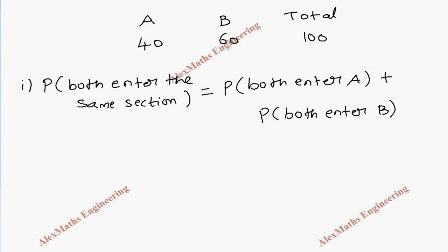When two persons enter section A, they are among the 40, so it is 40C2 divided by the total 100C2. The same way, when both enter section B, both are among the 60, so it is 60C2 divided by 100C2.